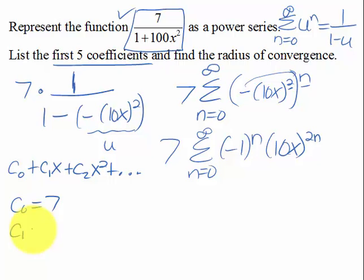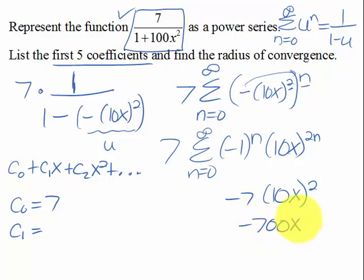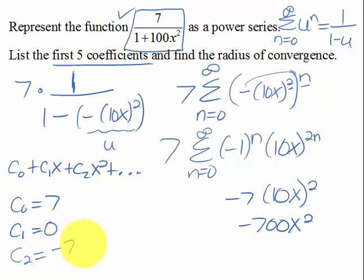Now to find c sub 1, well, if I put in a 1, I have negative 1 to the 1 times 7, which is negative 7, and then putting in a 1 here times 10x squared, but wait just a minute, that's not going to be the x term, because I'm squaring the x, that's going to be 100, so it's going to be negative 700x squared. So c sub 1 is actually 0, because there is no x term in this, that's missing, and I just found c sub 2, the coefficient on the x squared term, is negative 700.